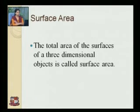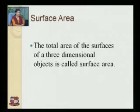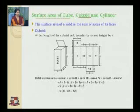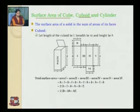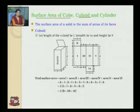Surface area: the total area of the surfaces of a three-dimensional object is called the surface area. Now, surface area of a cuboid. If we take a cuboidal box and cut it and open it flat, we get a diagram labeled 1 to 6.